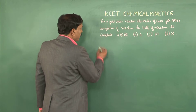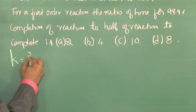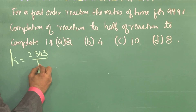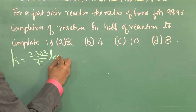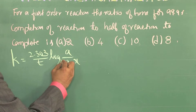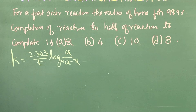For a first order reaction, the expression for rate constant is: K = 2.303 / T × log(A / (A − X)), base 10. Here, A is the initial concentration, X is the amount that has reacted in time T, and A minus X is the amount unreacted in time T.